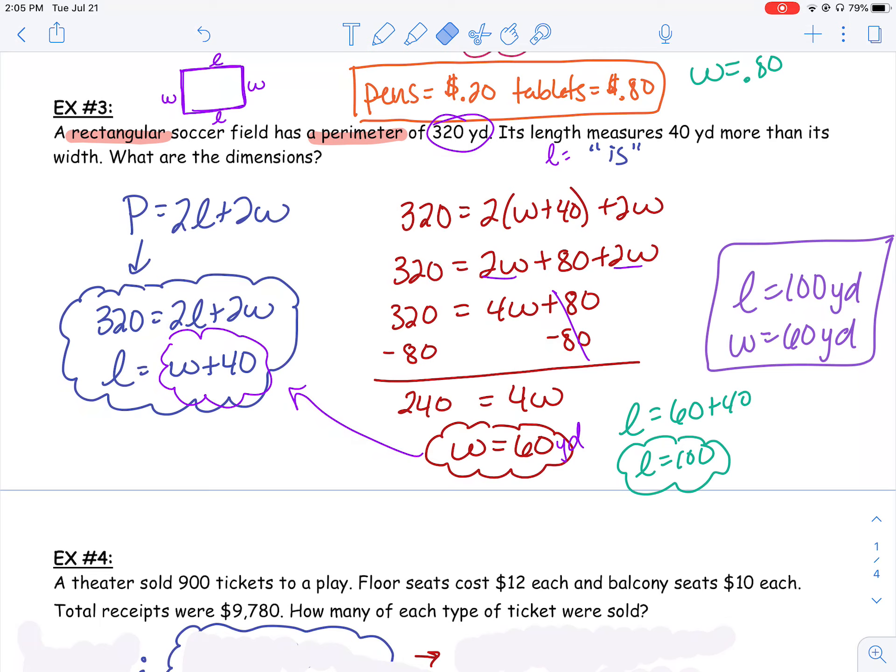And 2 times 60 is 120. Well, 200 plus 120 is 320, so I know I got the right answer. I've set it up right, I've solved it correctly, and I've given my answer labeled correctly.